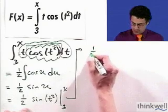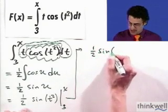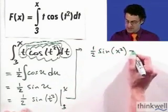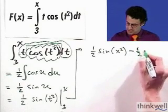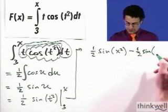When I plug in x, I see 1 half sine of x squared. And then I have to subtract off when I plug in 3, which is 1 half sine of 3 squared, which is 9.